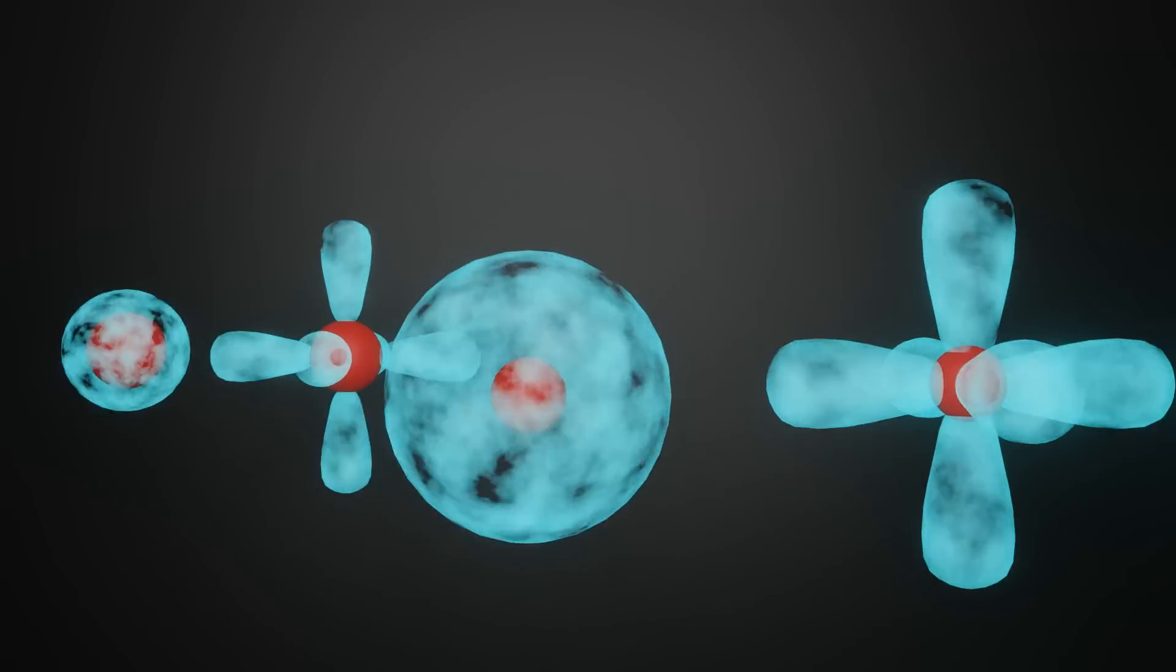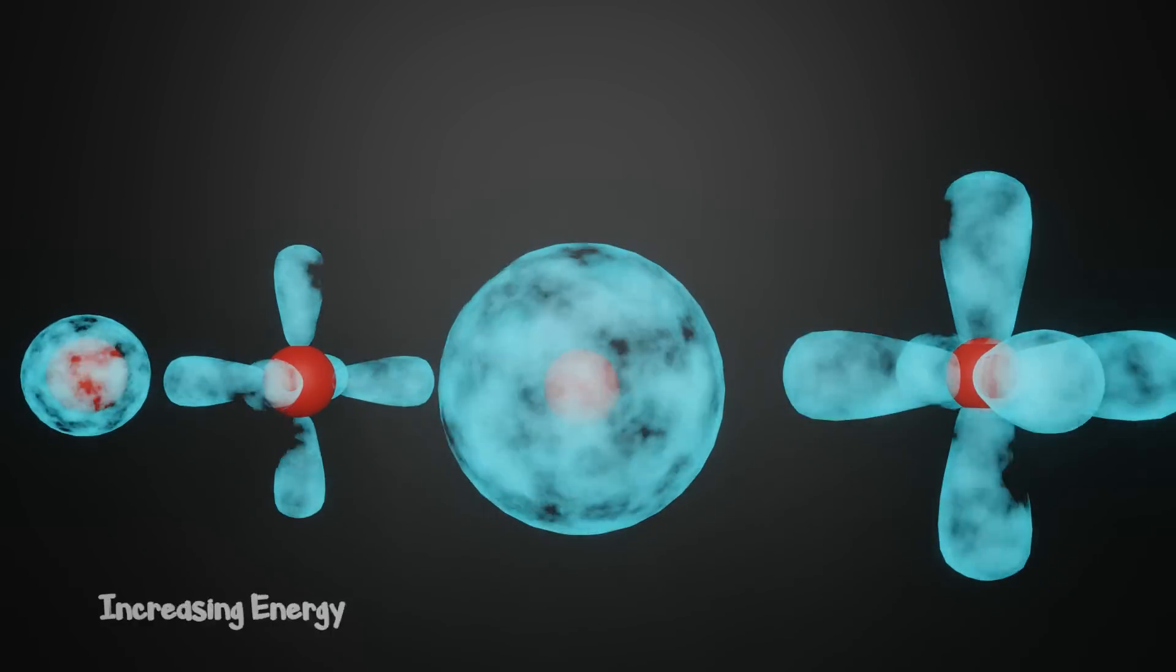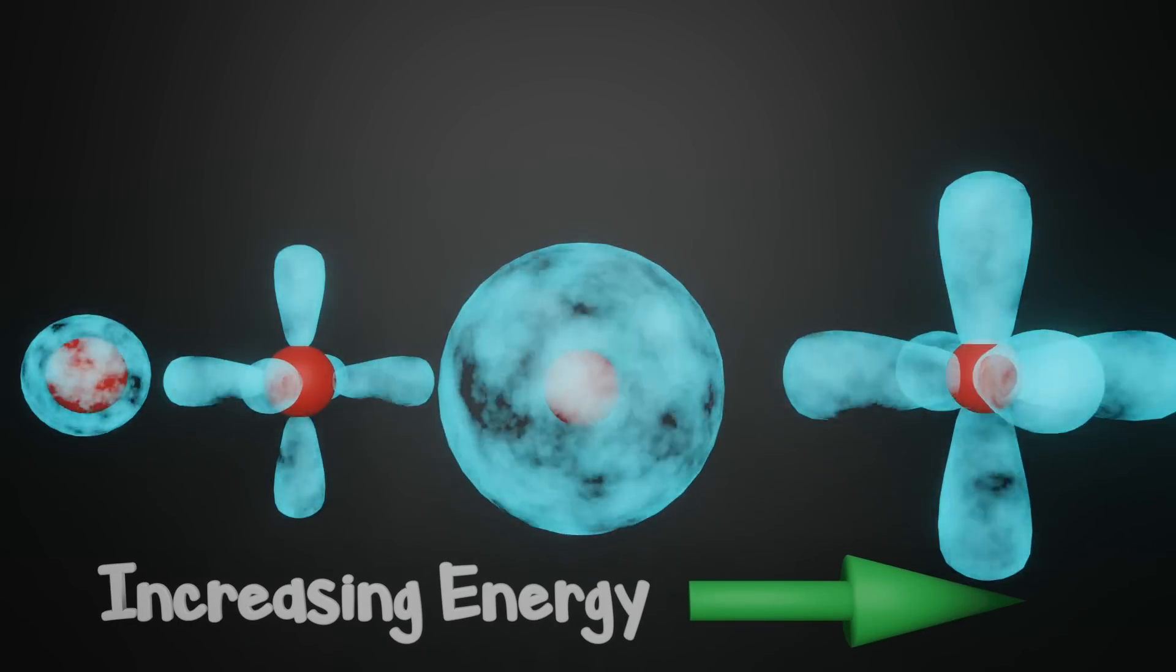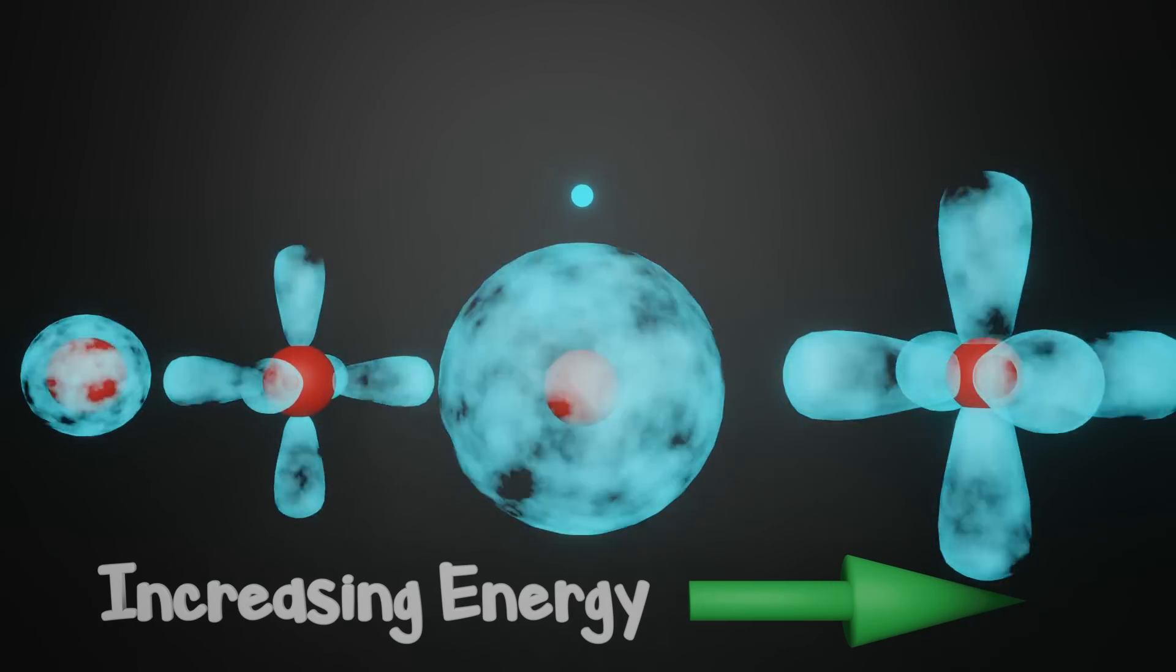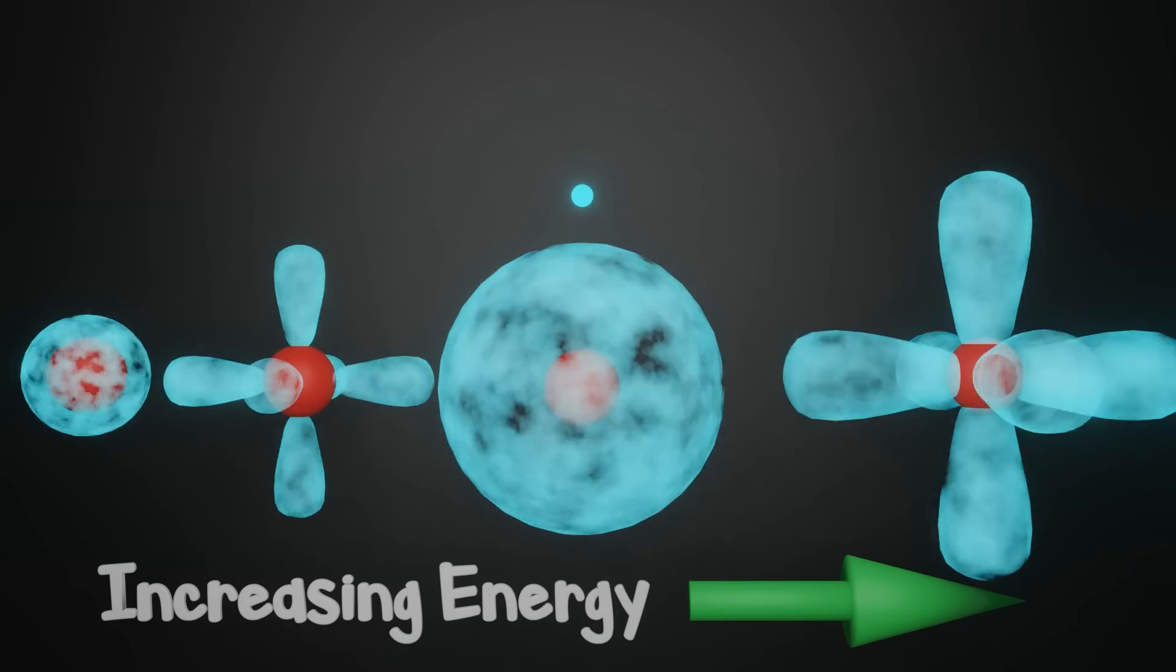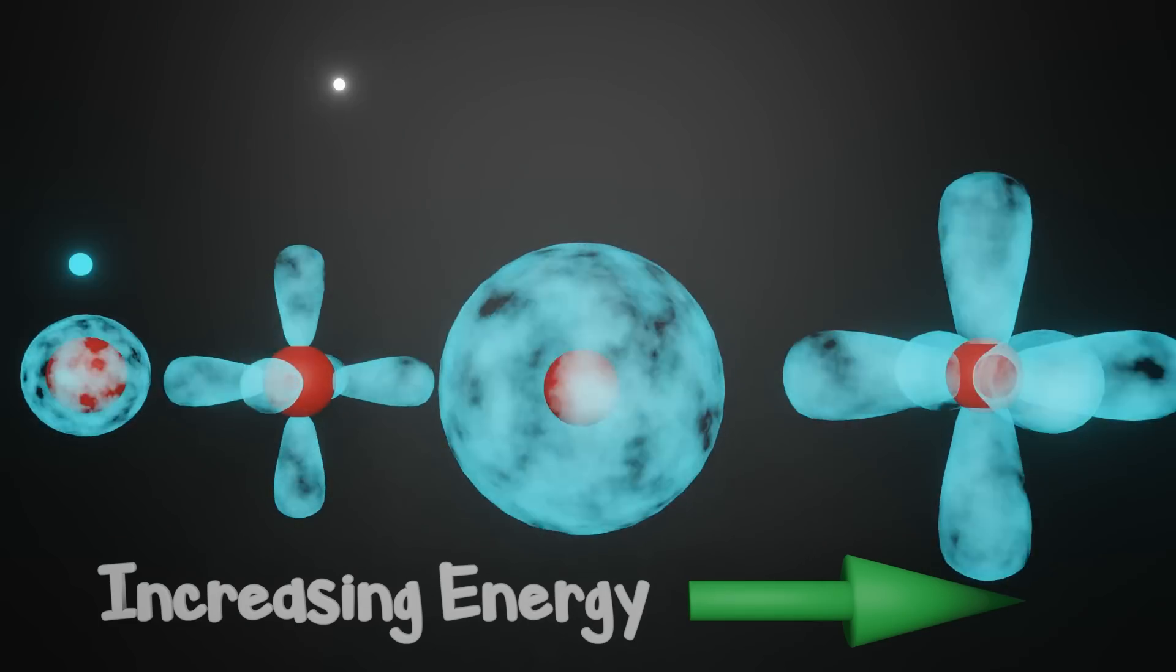Each orbital and subsequent wave function possess a unique energy level. So our bounded electron can only change its energy in quantized amounts, and these changes in energy stimulate the creation of photons or light.